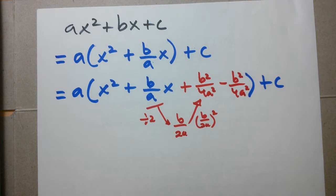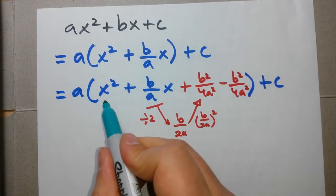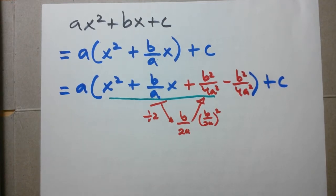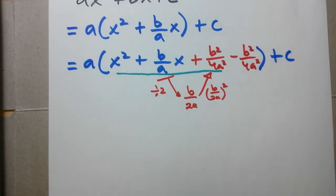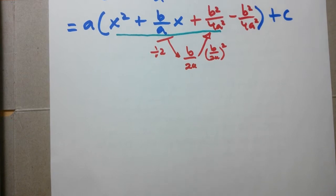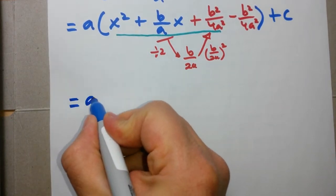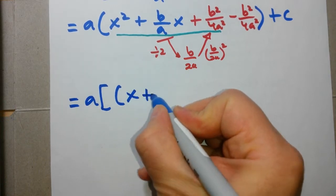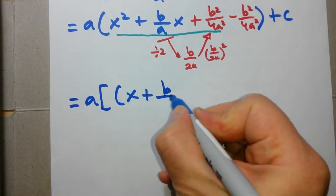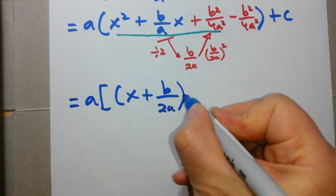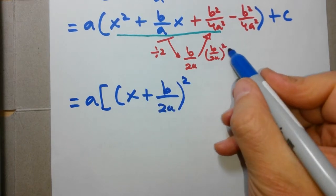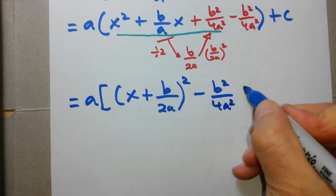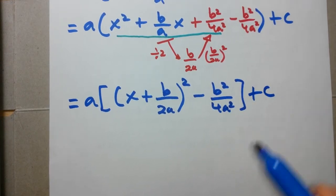Next, let's take these three terms and let's factor them, since they are a perfect square trinomial. So we end up with the following. We end up with a open the square brackets, open parentheses, x plus b over 2a squared, minus b squared over 4a squared, close the square brackets, bring down the c.